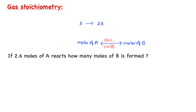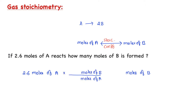For example, if 2.6 moles of A completely reacts, how many moles of B is formed? We start with the number of moles of A and multiply by a conversion factor with moles of A in the denominator and moles of B in the numerator. From the stoichiometric equation, for every mole of A consumed, we get 2 moles of B produced. The conversion factor is 2 moles of B per 1 mole of A. Moles of A cancels, and we get 5.2 moles of B.